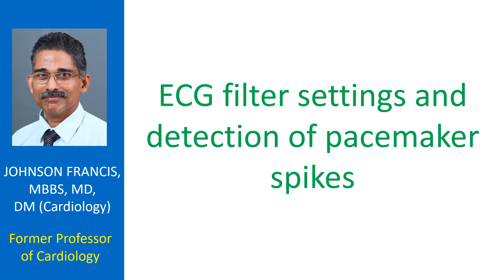In the illustration below, 0.08 Hz is the high pass filter, meaning that the ECG amplifier passes all frequencies above that limit. 40 Hz is the low pass filter, indicating that all frequencies below that can pass through.